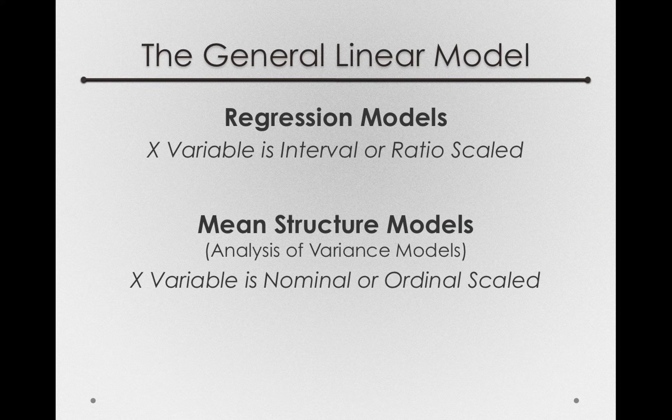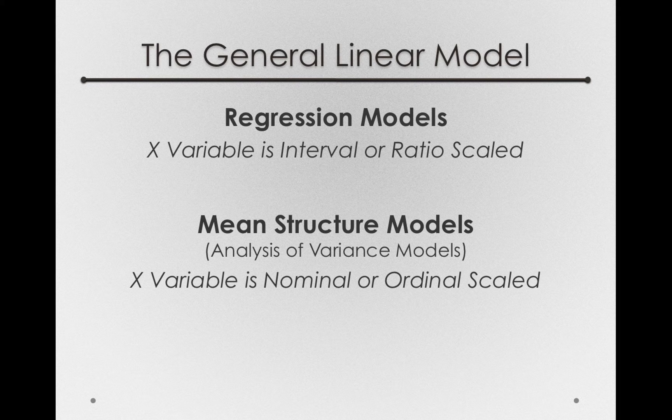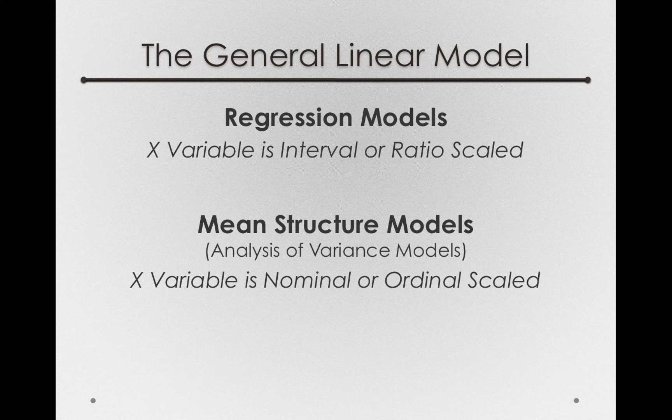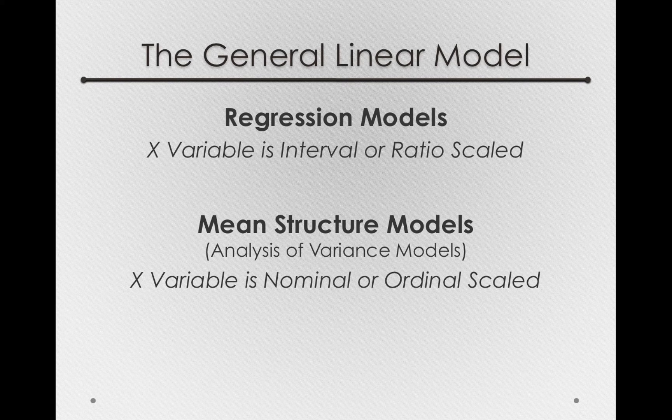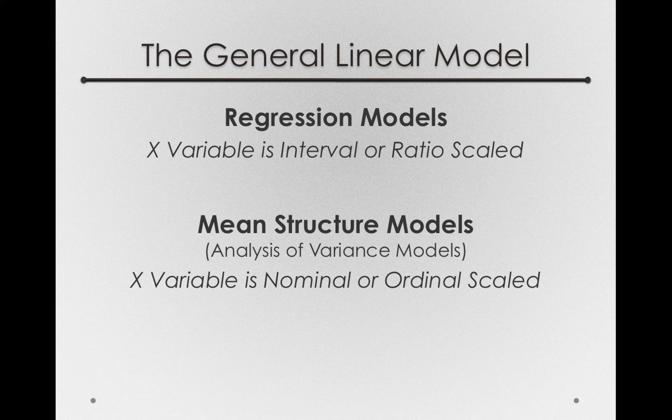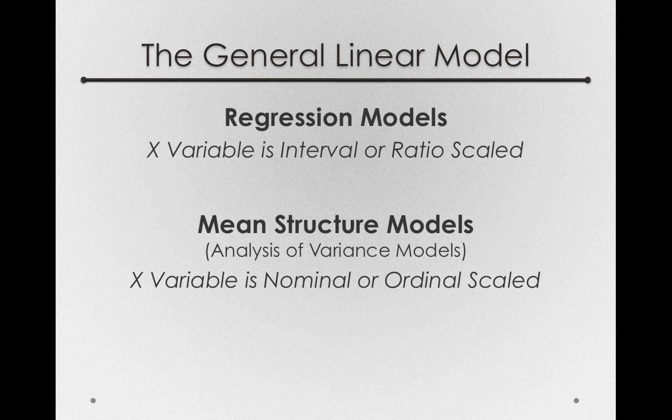So in regression models, the x variable is interval or ratio scaled. And in mean structure models, the x variable is nominal or ordinal. That is, in a regression model we're predicting something continuous on the basis of something else continuous, and in a mean structure model we're predicting something continuous on the basis of a grouping.